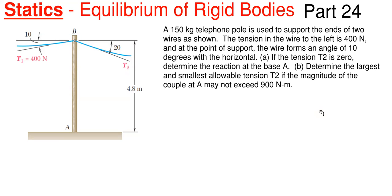In today's video we're going to be covering statics equilibrium of rigid bodies and we're going to be finding some reactions. This is our 24th part in this series. We have a 150 kilogram telephone pole used to support the ends of two wires. The tension in the wire to the left is T1 = 400 newtons, forming a 10 degree angle with the horizontal. T2 is 20 degrees off its horizontal, and the telephone pole is 4.8 meters tall. Part A says if T2 equals zero, determine the reaction at base A. Part B says determine the largest and smallest allowable tension T2 if the magnitude of the couple at A may not exceed 900 newton meters.